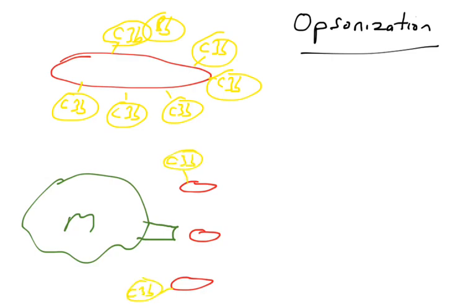But if a pathogen is covered in C3Bs, that actually makes the macrophage phagocytose the pathogen with a higher efficiency. So decorating a pathogen with C3Bs results in higher efficiency of phagocytosis. And that is the process of opsonization.